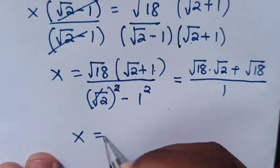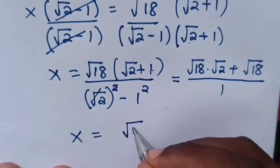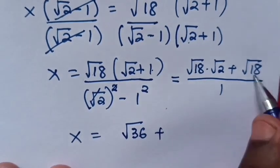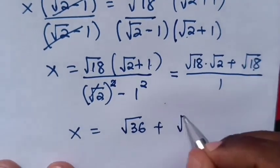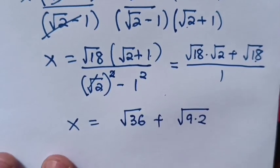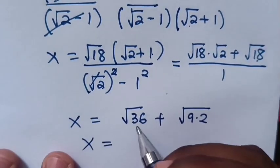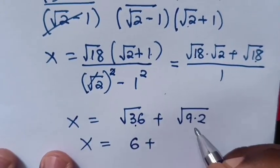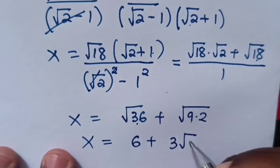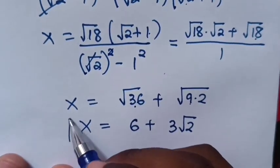Therefore, x is equal to square root of 36 plus square root of 9 times 2. x is equal to 6 plus 3 square root of 2. So, this is the answer.